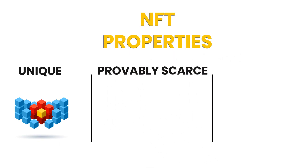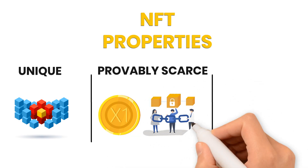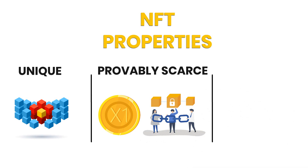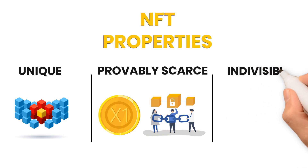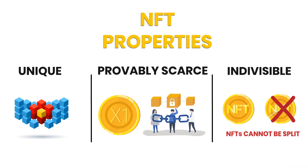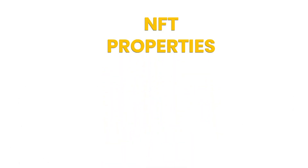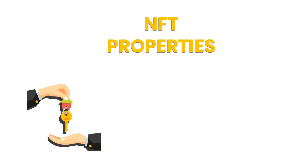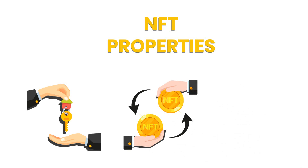Provably scarce — there is usually a limited number of NFTs, with an extreme example of having only one copy. The number of tokens can be verified on the blockchain, hence its provability. Indivisible — most NFTs cannot be split into smaller denominations, so you cannot buy or transfer a fraction of your NFT. Similarly to standard tokens, NFTs also guarantee the ownership of the asset, are easily transferable and are fraud-proof.